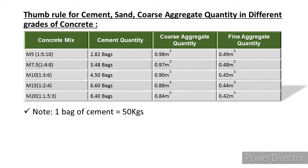M15 (ratio 1:2:4) — required cement quantity is 6.6 bags, coarse aggregate 0.88 m³, and fine aggregate 0.44 m³. M20 (ratio 1:1.5:3) — required cement quantity is 8.4 bags, coarse aggregate 0.84 m³, and fine aggregate 0.42 m³. Note: one bag of cement equals 50 kg.